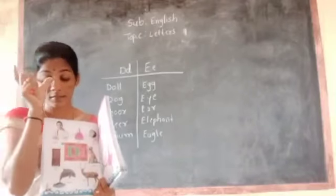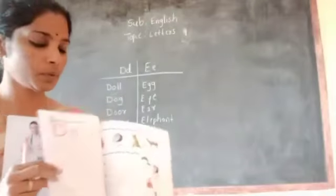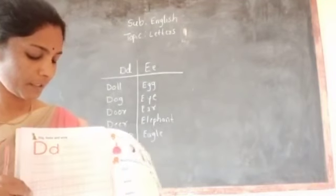You write the spellings. At least 5 words and write in the book. Practice. How to write D? Look at here.